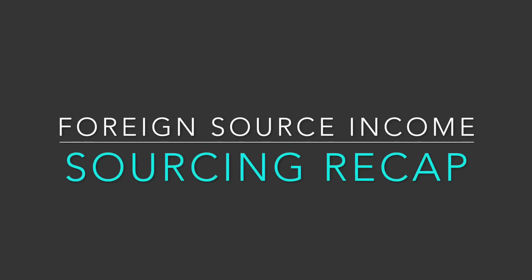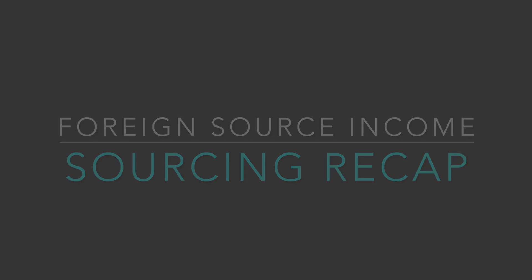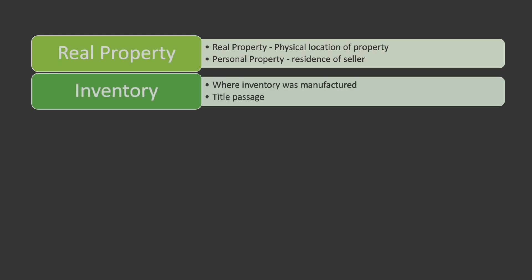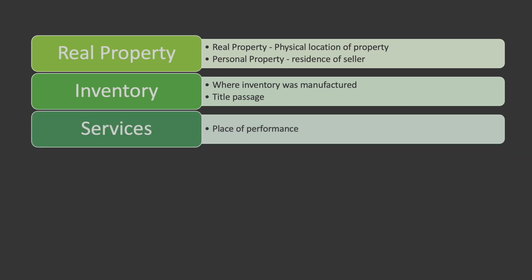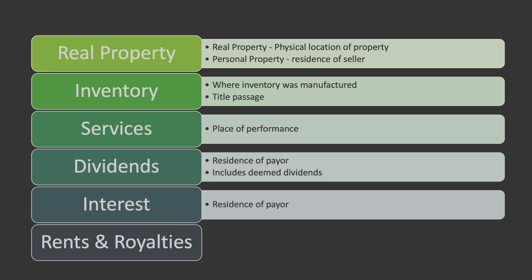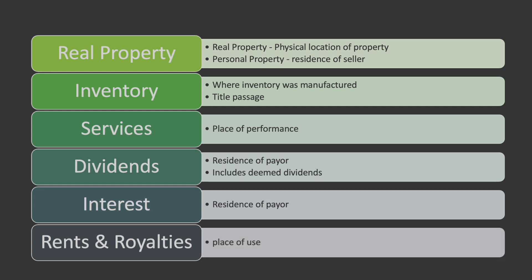Let's recap the sourcing rules for all the various types of income we've discussed over the last two videos. Real property is sourced based on the physical location of the property; personal property looks to the residence of the seller. Inventory requires answering two questions: where the inventory was manufactured if we are the manufacturer, and title passage on the sale. Services are sourced based on place of performance. Dividends look to the residence of the payer, including deemed dividends. Interest is based on residence of the payer, and rents and royalties are based on place of use.